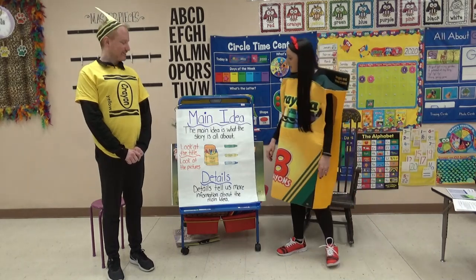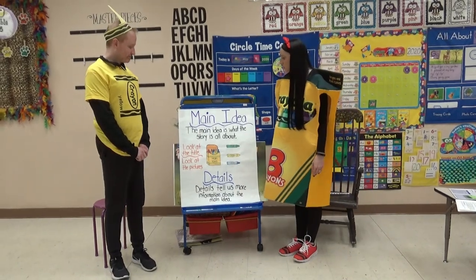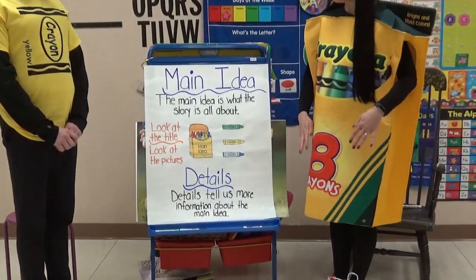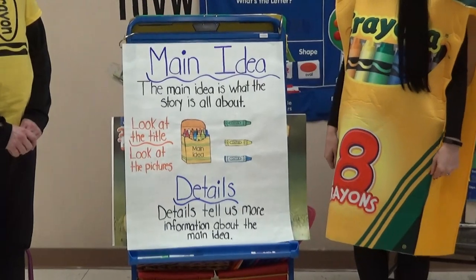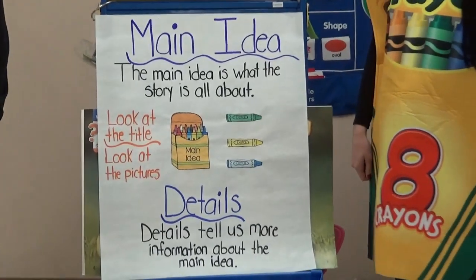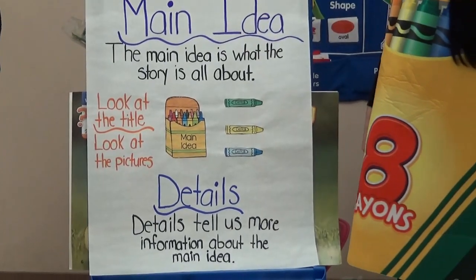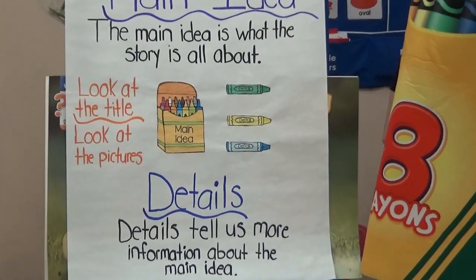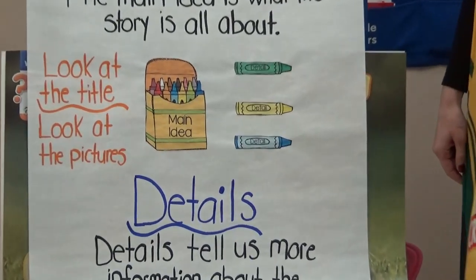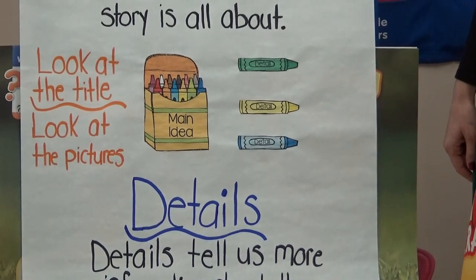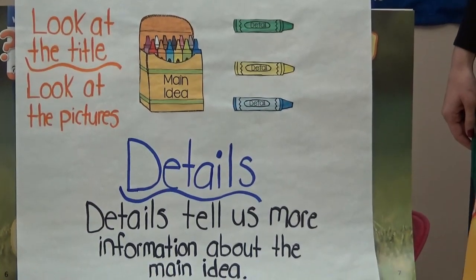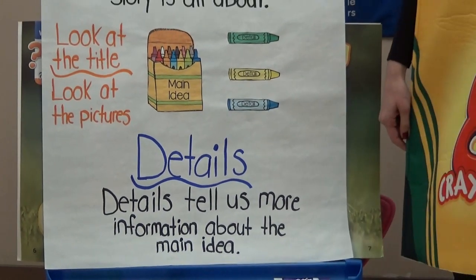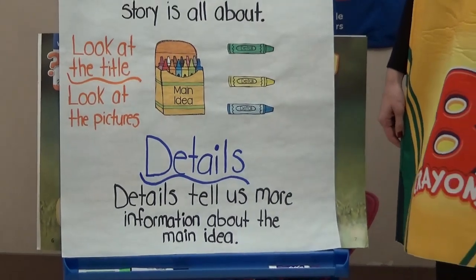The main idea is what the story is all about. To help you figure out what the main idea is, you can look at the title or look at the pictures in your story. The details tell us more information about the main idea.